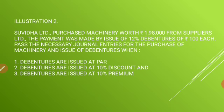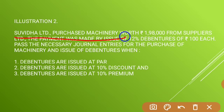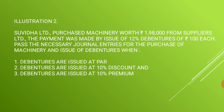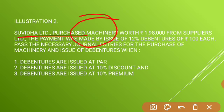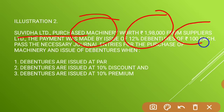Now let us go with the sum. Subita purchased machinery worth rupees 1,98,000 from Suppliers Limited. The cost of the machinery will be 1,98,000 and it was purchased from Suppliers Limited.